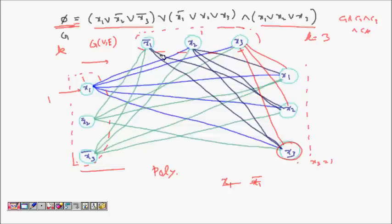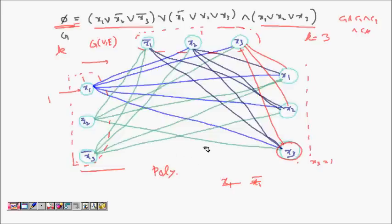Conversely, assume G has a clique of size k. The clique has exactly one vertex per clause (no edges exist within the same triple). Set all literals corresponding to those k vertices to 1. Since they are pairwise consistent — no two are negations — there is no contradiction. Each clause has one literal set to 1, so φ equals 1. This is a satisfying assignment. This completes the proof: φ has a satisfying assignment if and only if G has a clique of size k.